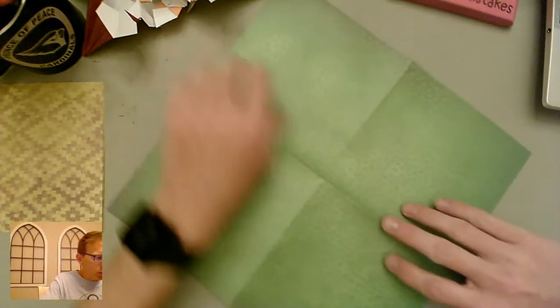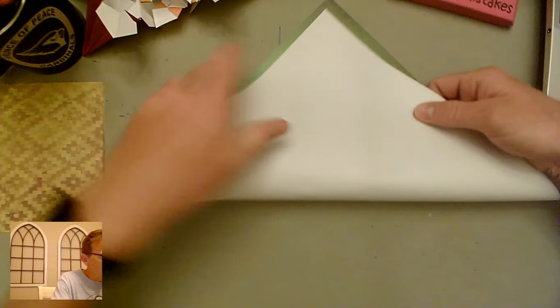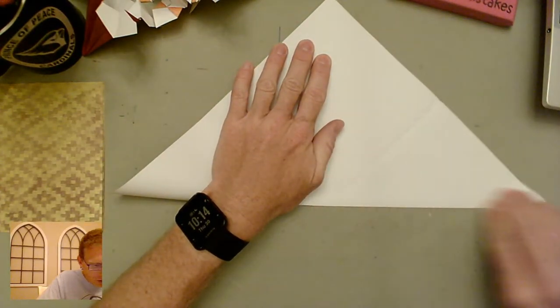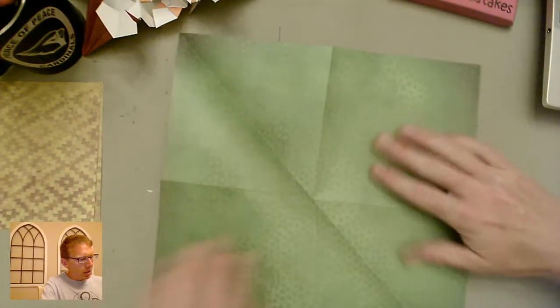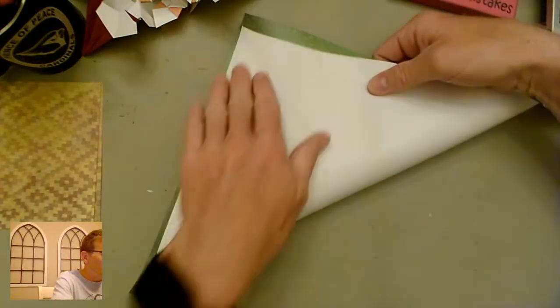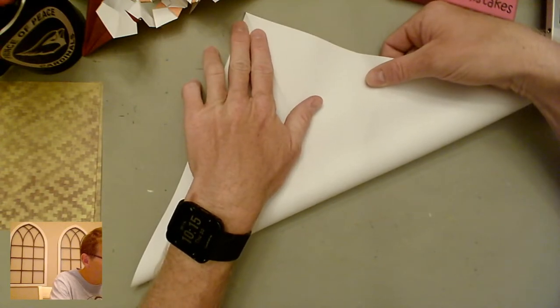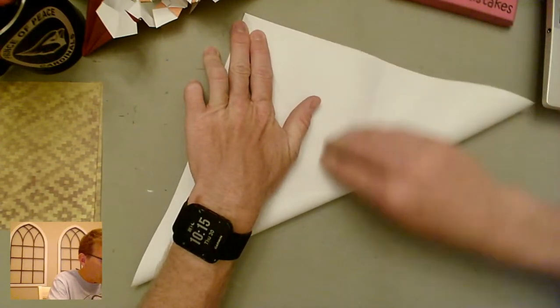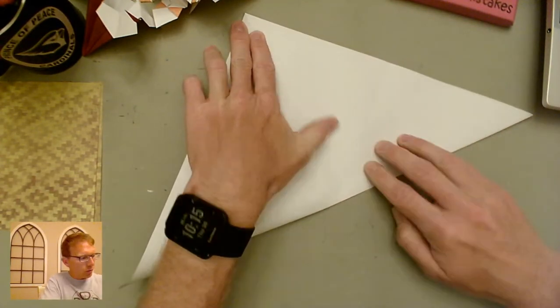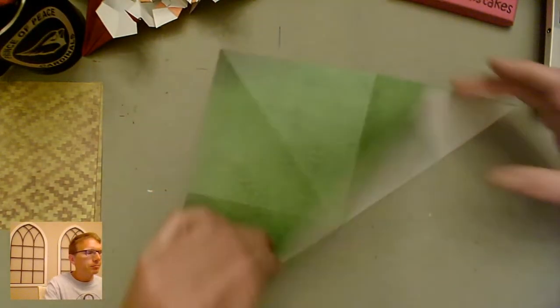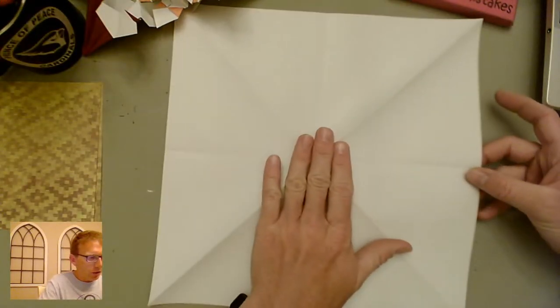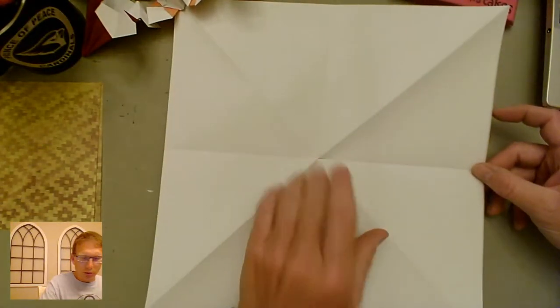Then we're going to flip it so it's color up. And this time we're going to do an X. So we're going to fold on the diagonal this time. One and two. Now this is a 12 inch by 12 inch piece of paper. You can scale these up or down depending on what size you want. So you might just experiment a little bit and see what you get.